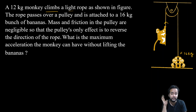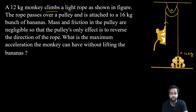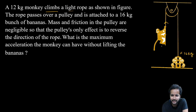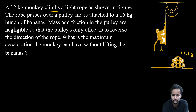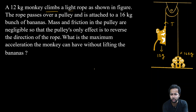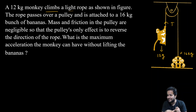Banana upar nahi uthega — yeh condition hai. Toh isko hum kaise solve karenge? Pehle dekho, is monkey ke upar kitne forces act ho rahe hain: downward direction mein force act ho raha hai wo hai mg. Monkey ka mass hai 12 kg, toh 12g. Aur upar ke direction mein jo force act ho raha hai wo hai Tension force.